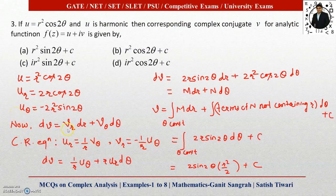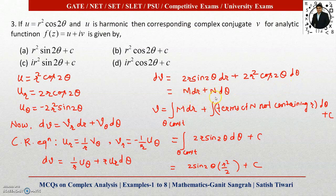To find v, we write dv = v_r dr + v_θ dθ. Using the Cauchy-Riemann equations in polar form: u_r = (1/r)v_θ and v_r = −(1/r)u_θ. Replacing v_r and v_θ in terms of u_r and u_θ: v_r = −(1/r)u_θ = −(1/r)(−2r² sin 2θ) = 2r sin 2θ, giving the term 2r sin 2θ dr.